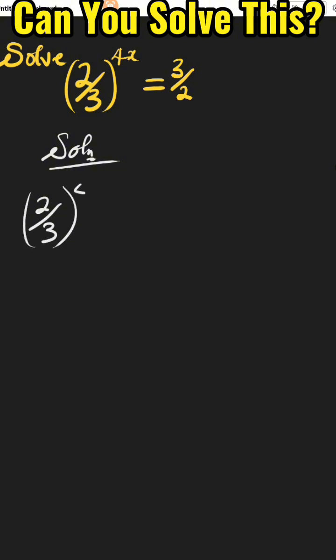If we compare the fractions, the left-hand side is the reciprocal of the right-hand side. That is to say, (2/3) raised to the power of 4x is equal to 1 over (2/3).